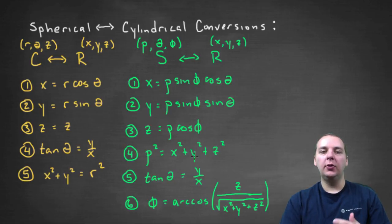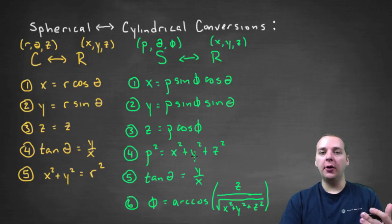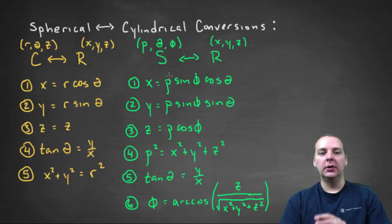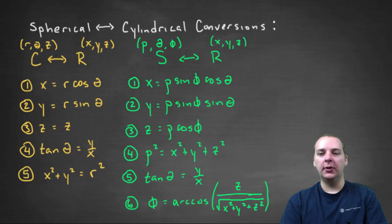Over the last couple of videos we've talked about two new forms or ways of expressing points in three dimensional space: cylindrical form and spherical form. In this video we're going to talk about how to convert between those two forms. We've already talked about converting from cylindrical to rectangular and spherical to rectangular, but not spherical directly to cylindrical. So here are all of our old conversions, and it turns out these can help us discover new conversions directly from cylindrical to spherical.